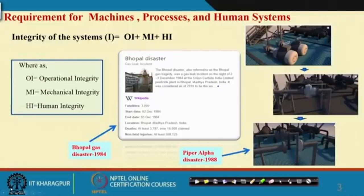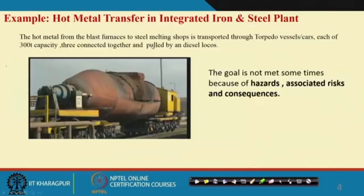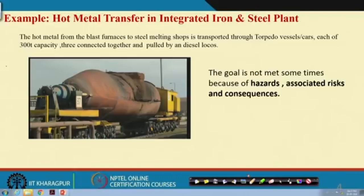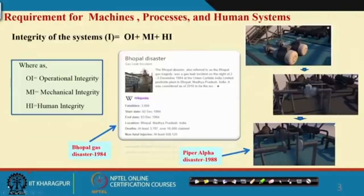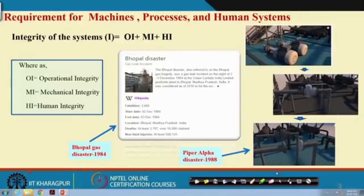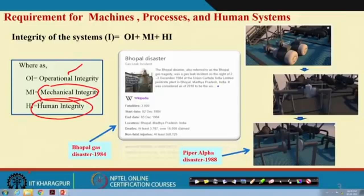For any machine, process, system, or equipment, the fundamental requirement is that it should have three integrities: operational integrity, mechanical integrity, and human integrity. The definition of integrity is that things work as per your design and as per your requirement — that is called integrity.